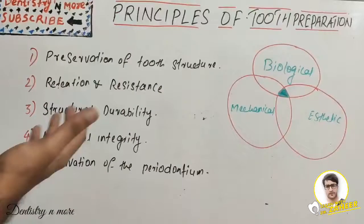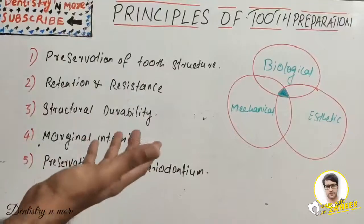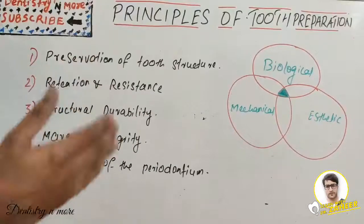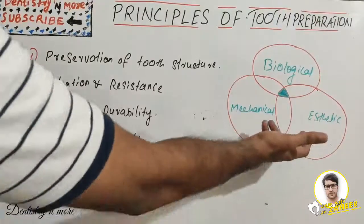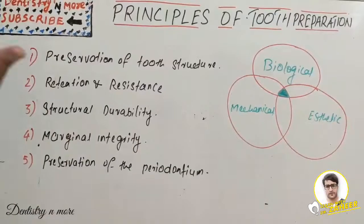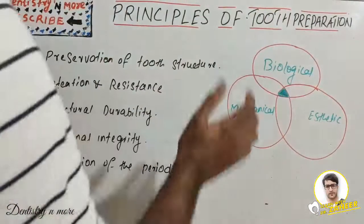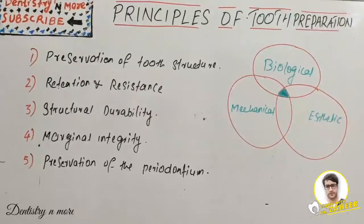In the biological category, we need to think about pulp vitality maintenance, adjacent teeth, soft tissues, and conservation of tooth structure. In the mechanical category, we have resistance and retention form. In aesthetics, it includes minimal display of metal, adequate thickness of porcelain, and proper shade matching. When all three factors combine, they produce the best tooth preparation.